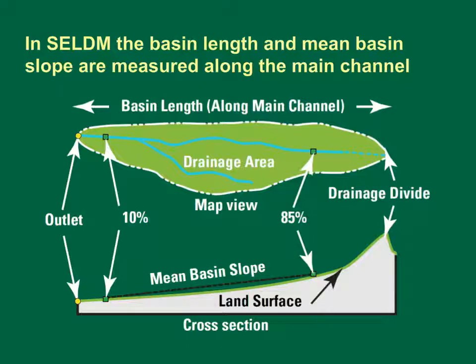The mean basin slope, also known as the main channel slope, is the average slope of the main channel of the stream upstream from the point of interest. The mean basin slope selected for SELDOM analyses is known as the 1085 slope because it is calculated by determining the locations and elevations of points at 10% and 85% along the main channel from the point of interest to the basin divide, then dividing the difference in elevation in feet by the distance in miles between these points.